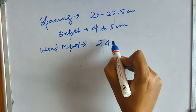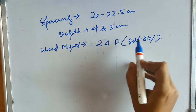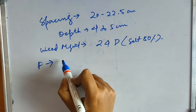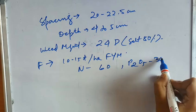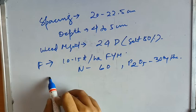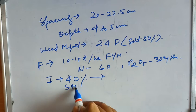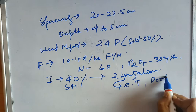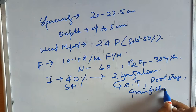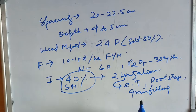For weed management in sorghum, 2,4-D with 80% salt is used. For fertilizers: FYM at 10 to 15 tons per hectare; nitrogen 60 kg per hectare; P2O5 30 kg per hectare. For irrigation management, soil moisture should be kept at 40% — similar to barley. Two irrigations are sufficient, applied at early tillering, boot stage, and grain filling stages, monitoring soil moisture levels.